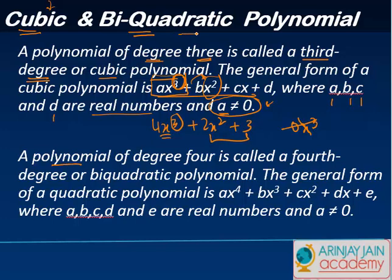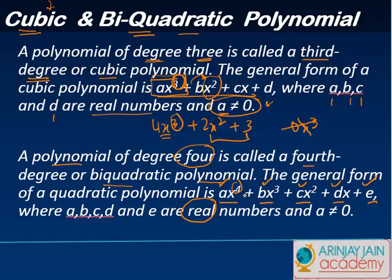The last one is the biquadratic polynomial, where the degree is four — also called a fourth degree polynomial. The general form is ax⁴ plus bx cubed plus cx squared plus dx plus e, where a, b, c, d, and e are real numbers. It's not necessary that all terms are present, but a must be there and a cannot be equal to zero.